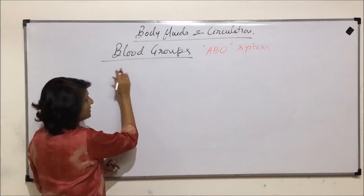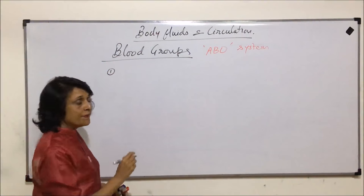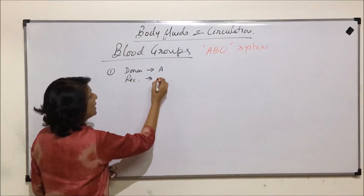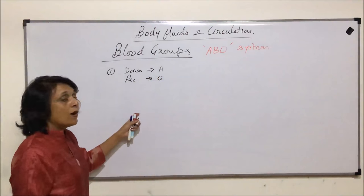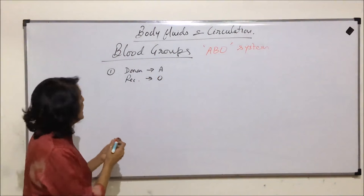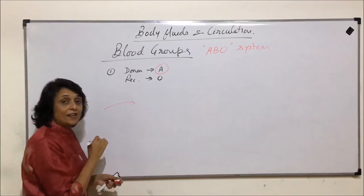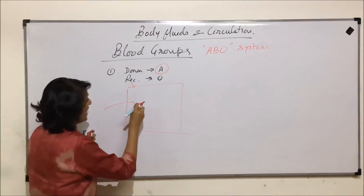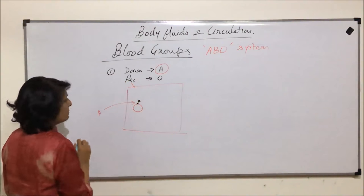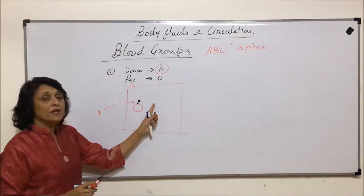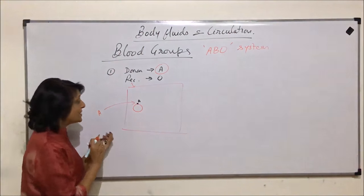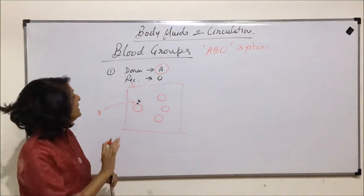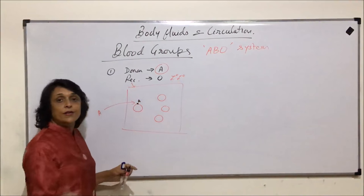We will take a couple of situations to understand. In situation 1, the donor has blood group A and the recipient has blood group O. The donor is giving blood group A, meaning the blood entering the recipient's body carries RBCs with antigen A. The recipient's blood group is O, with genotype IO IO, which is recessive.